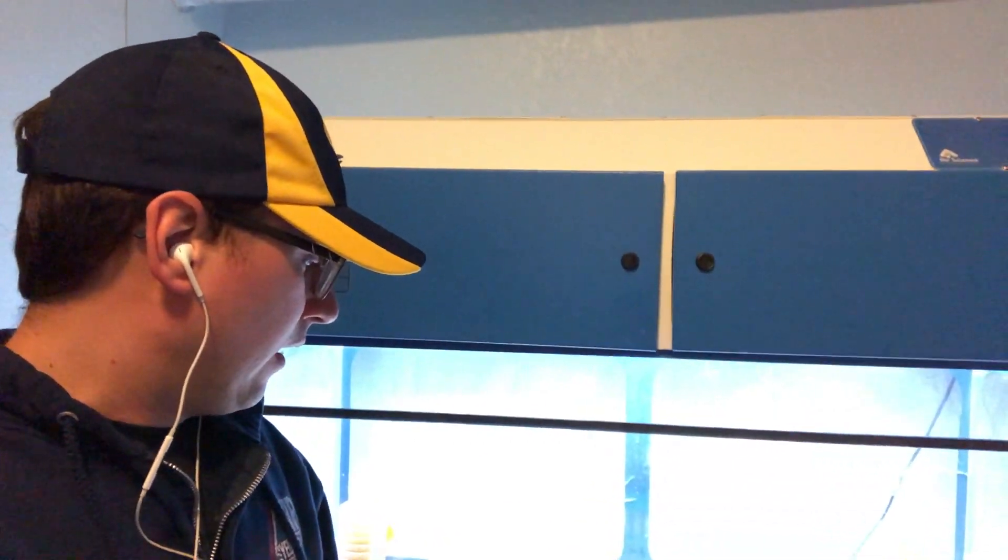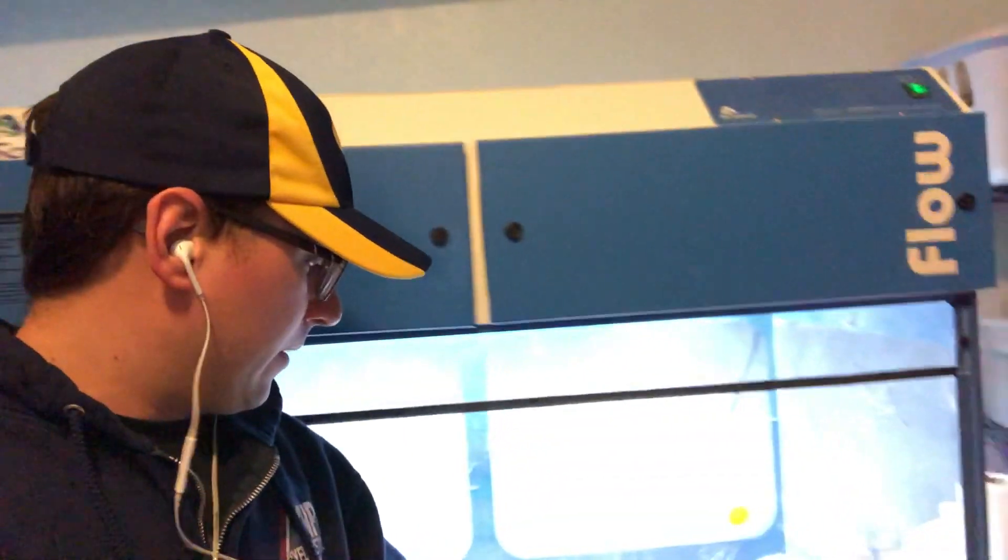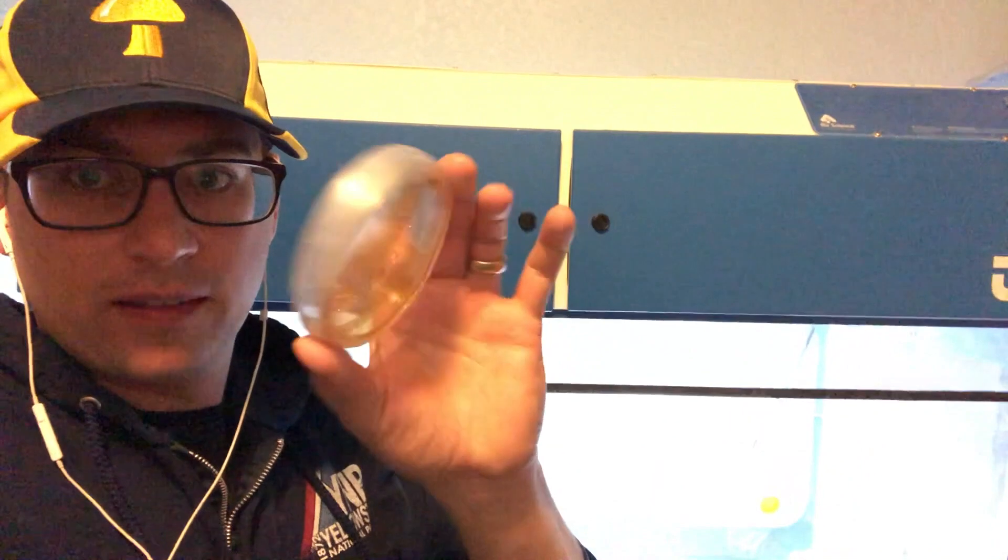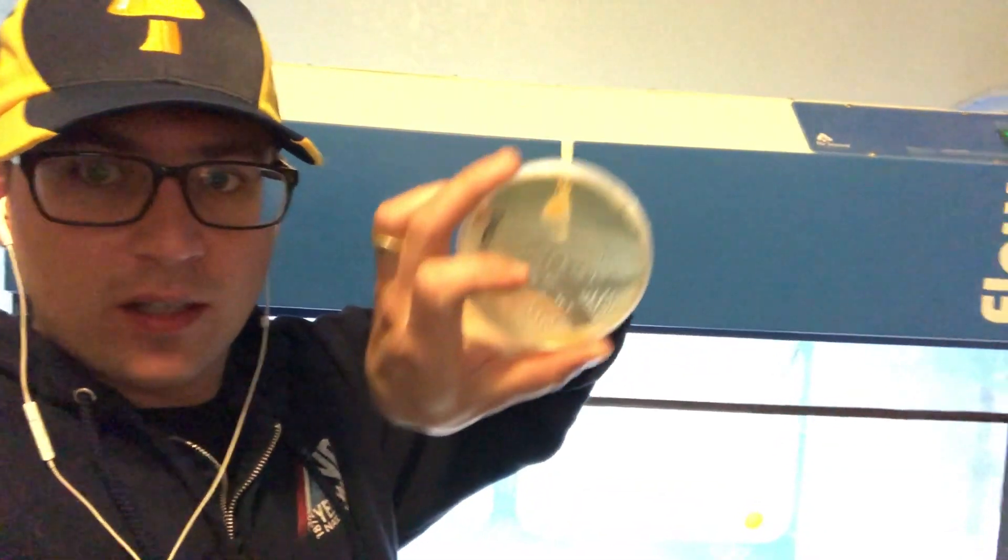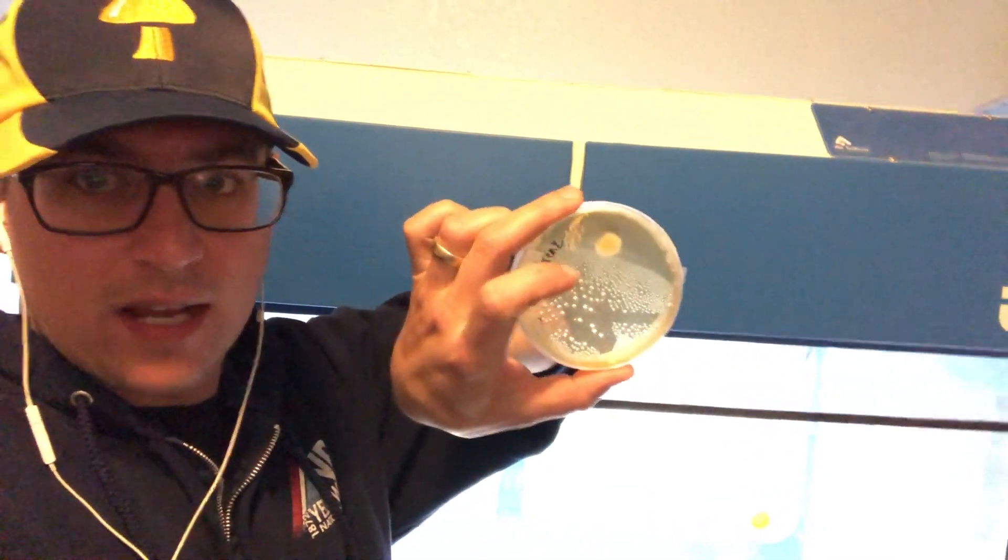So at the same time we've got our black pearl king that are starting to grow out. These were just single spore isolates that came from a 1 times 10 to the 4 serial dilution.